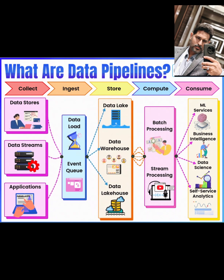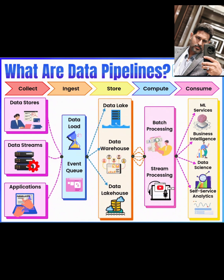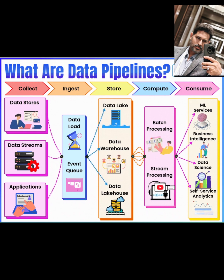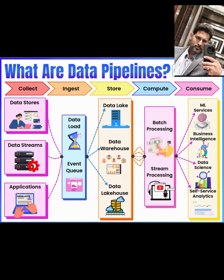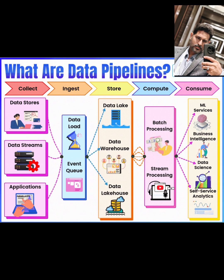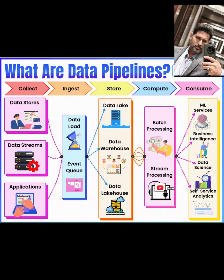Stream processing, on the other hand, handles data in real time as it arrives. Tools like Apache Flink or Kafka Streams process data on the fly, enabling low-latency use cases like fraud detection. For instance, Flink might process a stream of credit card transactions from Kafka, applying a sliding window to detect anomalies within a five-minute time frame. Both modes are crucial — batch for historical analysis, stream for real-time insights.